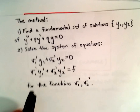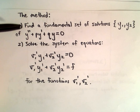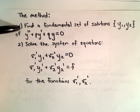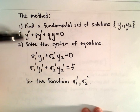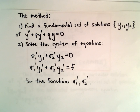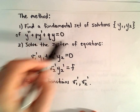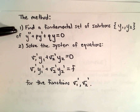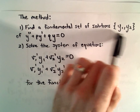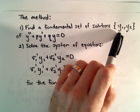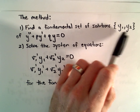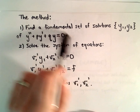Let's talk about the method, and then I'm going to do an actual example. The first thing you have to do is find a fundamental set of solutions y₁ and y₂ of that homogeneous equation. This is already a sticking point because there are no general procedures to do this. There are methods for lots of different cases, but sometimes even finding this fundamental set of solutions can be a problem.